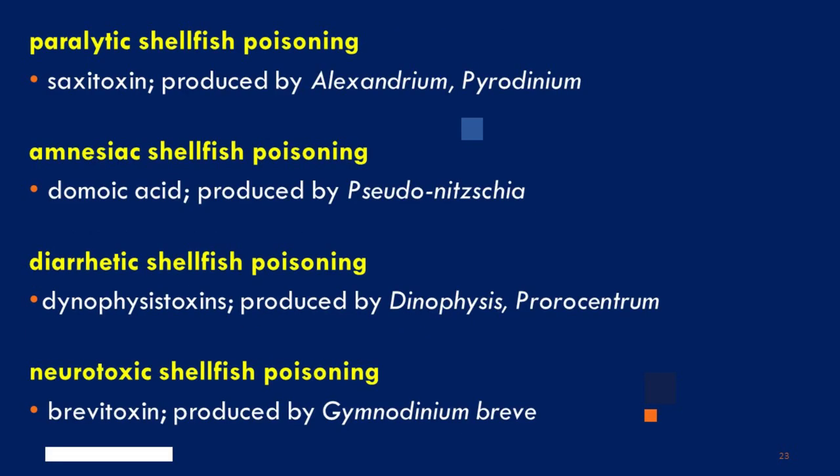Paralytic shellfish poisoning is caused by saxitoxin, produced by the dinoflagellates Alexandrium and Pyrodinium. Amnesiac shellfish poisoning is caused by domoic acid, a toxin produced by Pseudo-nitzschia, a genus of diatom. Diarrhetic shellfish poisoning is caused by dinophysistoxins, a toxin produced by dinoflagellates Dinophysis and Prorocentrum. And neurotoxic shellfish poisoning is caused by brevetoxin, a toxin produced by another dinoflagellate, Gymnodinium breve.